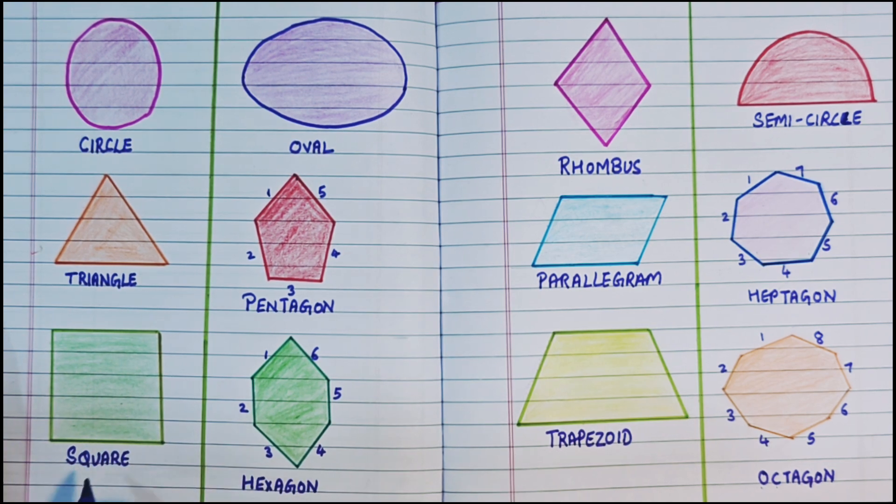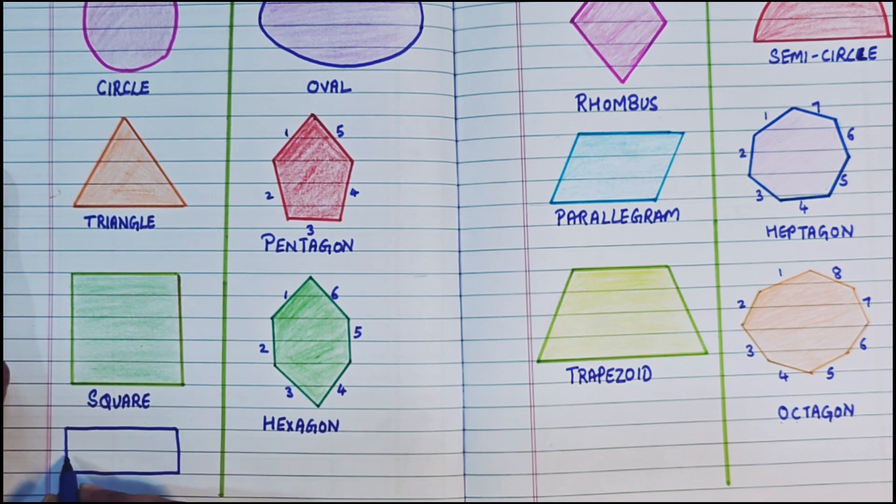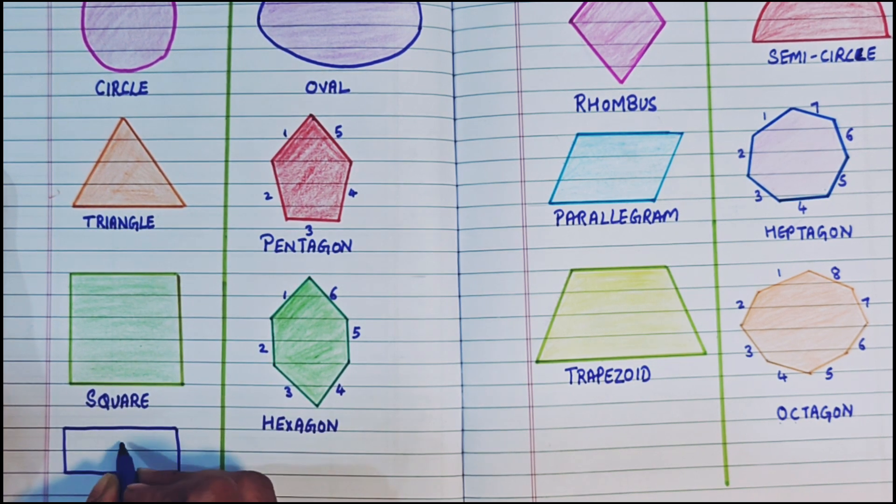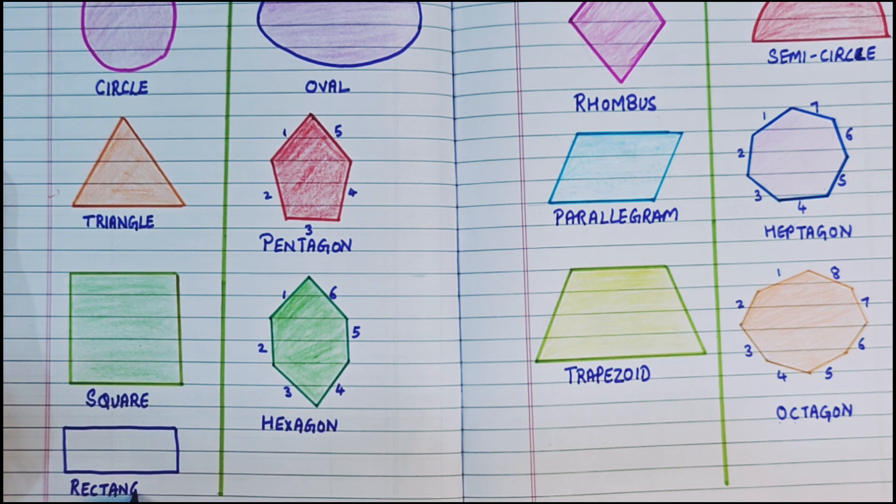Now there is one more 2D shape that I have missed, in which there are also 4 sides: 1, 2, 3, and 4. But 2 sides are smaller than the other 2 sides. So this is a rectangle. R-E-C-T-A-N-G-L-E. Rectangle.